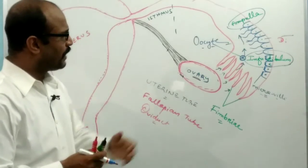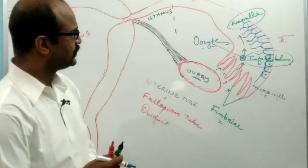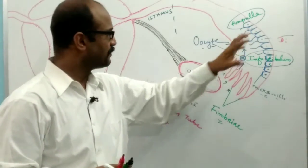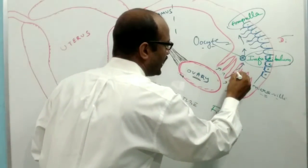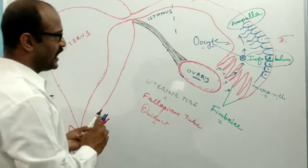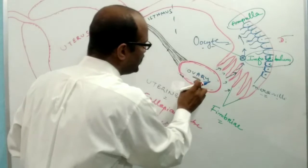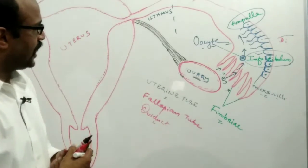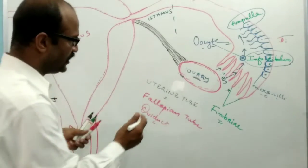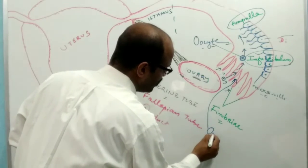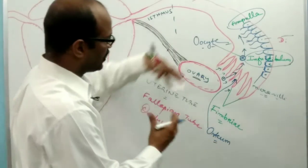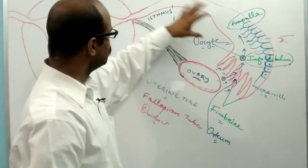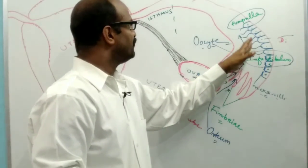By the peristalsis movement of the fallopian tube, by the beating of cilia of the fimbriae as well as the ciliated mucus epithelium, an incurrent canal is formed into the fallopian tube. The ovulated oocyte released from the ovary enters into the fallopian tube along with the peritoneal fluid through an opening known as the ostium.